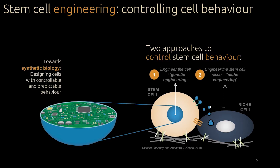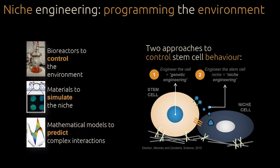We do this using two different approaches. The first uses synthetic biology tools to genetically engineer cells to perform a specific function. The second approach is what we call niche engineering, where we control the cell environment so that we make the cells follow specific developmental trajectories for a certain goal.